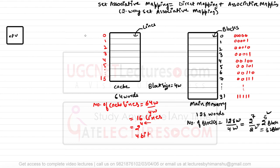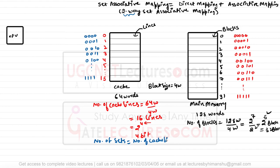Line 0 is represented as 0000, line 1 as 0001, line 2 as 0010, line 3 as 0011, up to 1111. So we have 4-bit addresses for the cache lines. Two-way set associative means these cache lines are divided into sets, and every set contains two lines. The number of sets equals the number of cache lines divided by the set size: 16 divided by 2 gives 8 sets.